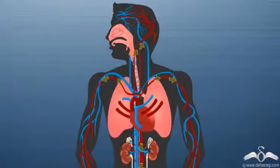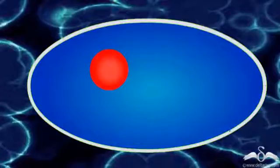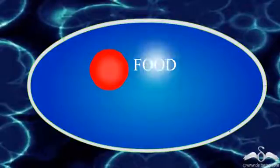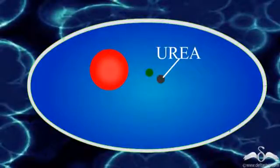Now let's see what is happening inside the cell. Inside the cell, the food is getting digested into nitrogenous wastes like urea, and this process is known as cellular digestion.